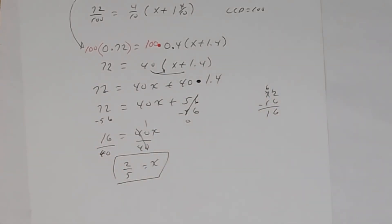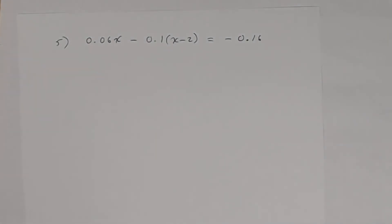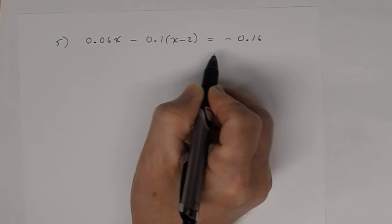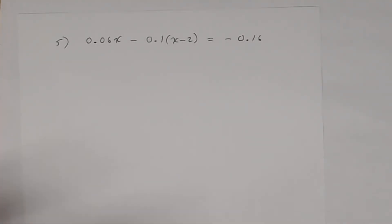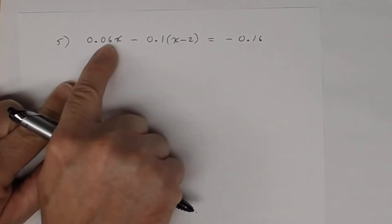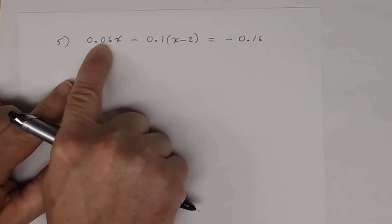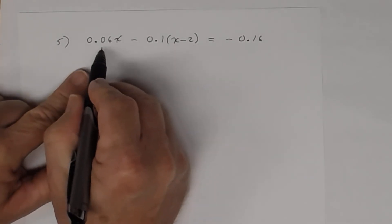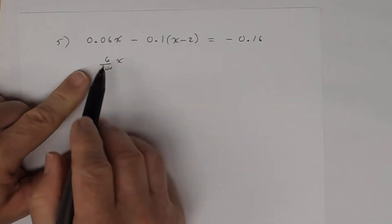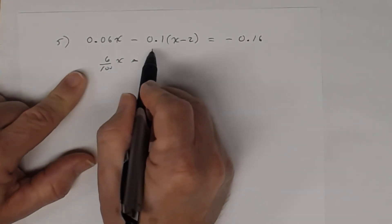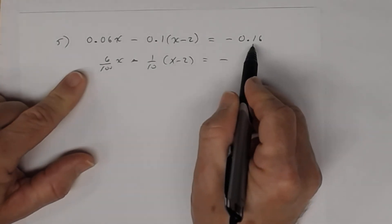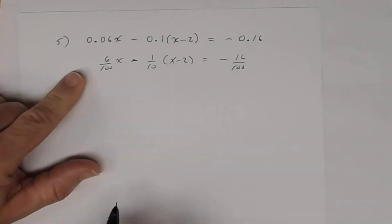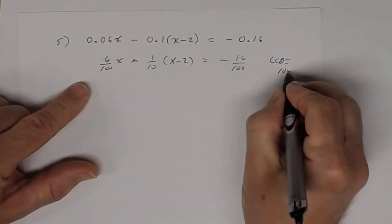Number 5: 0.06x − 0.1(x − 2) = −0.16. Reading as fractions: 0.06 is 6 hundredths, 0.1 is 1 tenth, 0.16 is 16 hundredths. The LCD is 100. Do not distribute first — clear the decimals by multiplying both sides by 100.